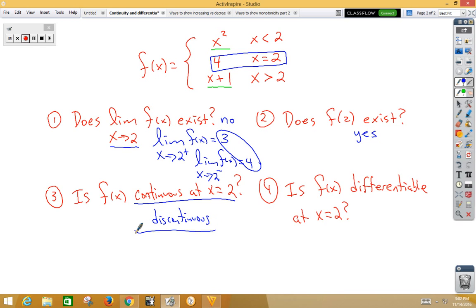Is it differentiable at x is 2? Since the two-sided limit does not exist, that tells us that we have a jump, and a jump is a point of non-differentiability. So no, we cannot take the derivative there.